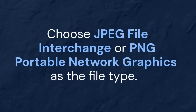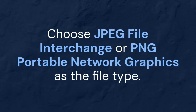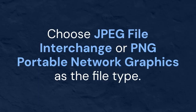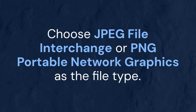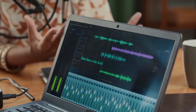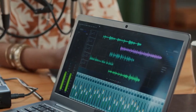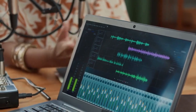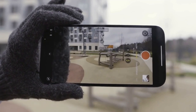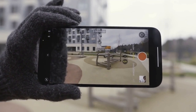Choose JPEG File Interchange Format or PNG Portable Network Graphics as the file type. Select a folder to save your images. PowerPoint will create a separate image file for each slide.